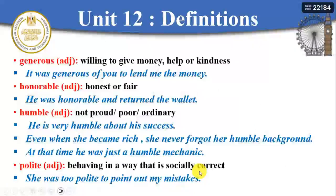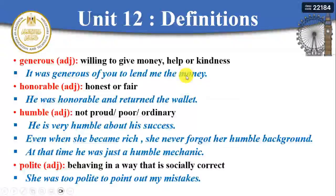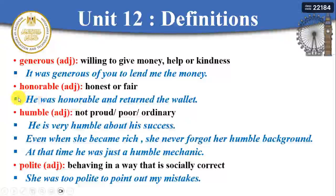Let's continue the vocabulary of Unit 12. To be 'generous' means willing to give money and help others out of kindness — to be kind to other people, to give them money or even a smile. For example: 'It was generous of you to lend me the money.' The noun form is 'generosity.' What about 'honorable'? It comes from the word 'honor' — to act decently, to do nothing bad, and not to harm other people.